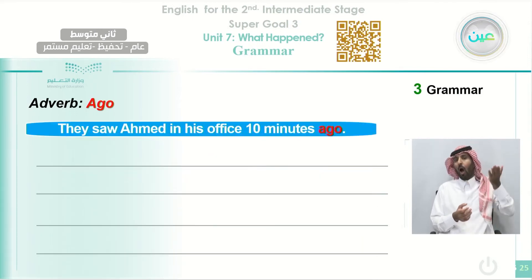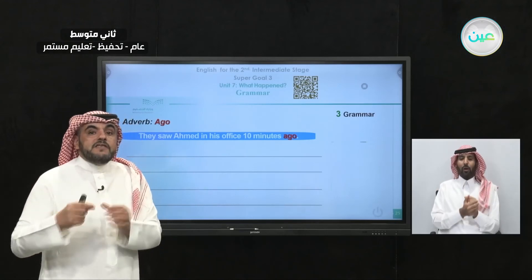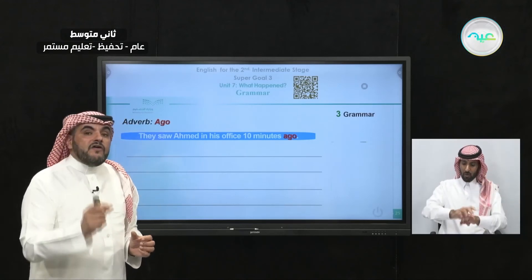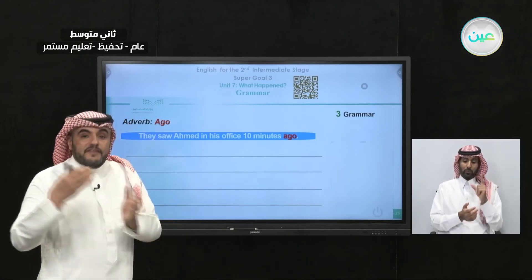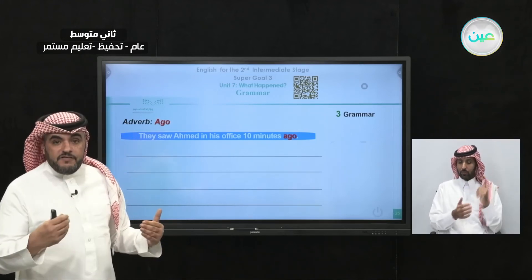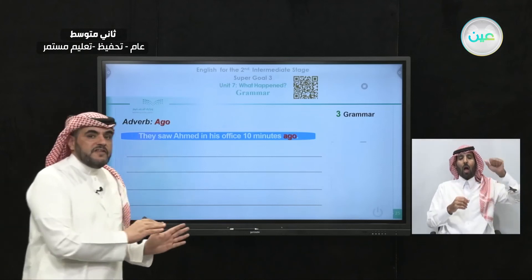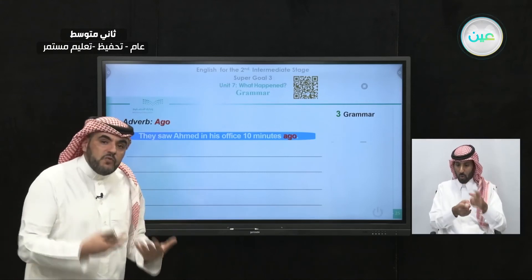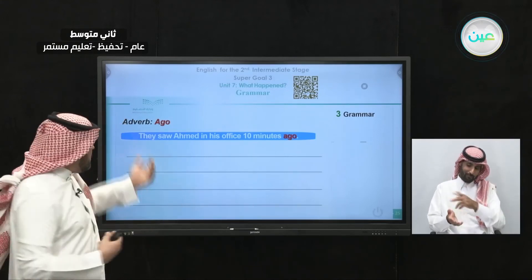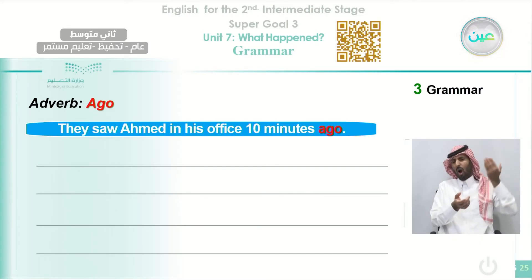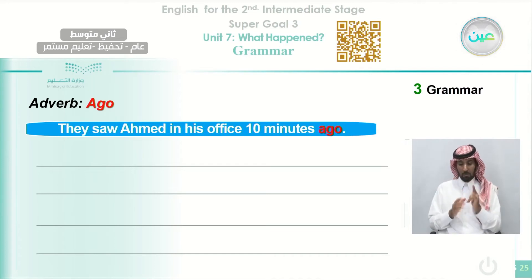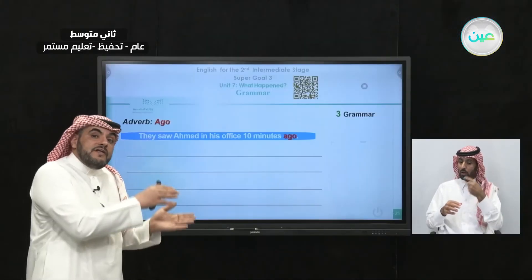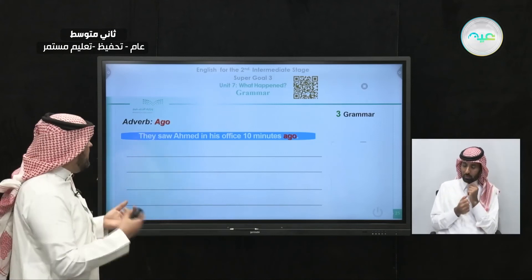Now, how to use 'ago.' If you talk about something that happened in the past and you want to specify the amount of time, you use 'ago.' It's different from the verb 'go' — it is an adverb that describes time and we use it with the past. For example: 'They saw Ahmed in his office 10 minutes ago' — that means 10 minutes past and before those 10 minutes, they saw Ahmed.